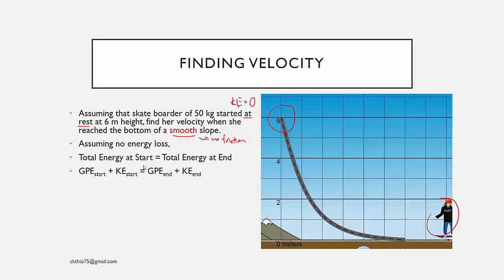Summing up all the total energy, we only have gravitational potential energy and kinetic energy at the start and end. We know kinetic energy at the start is 0, and gravitational potential energy at the bottom is 0 since it is at ground level. So the equation simplifies to: gravitational potential energy at the start equals kinetic energy at the end.